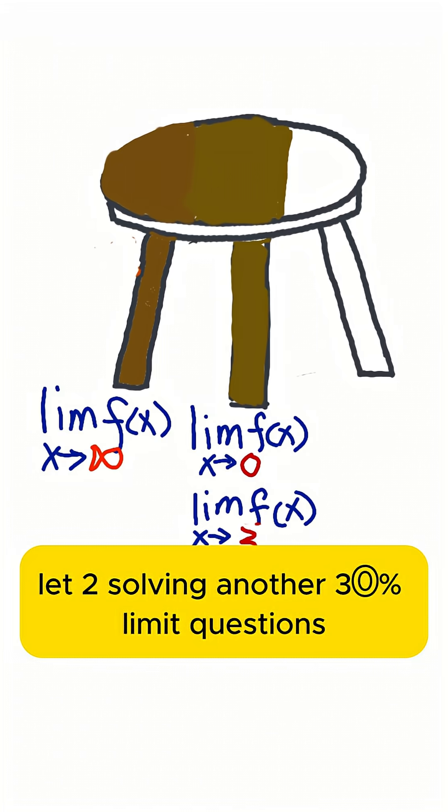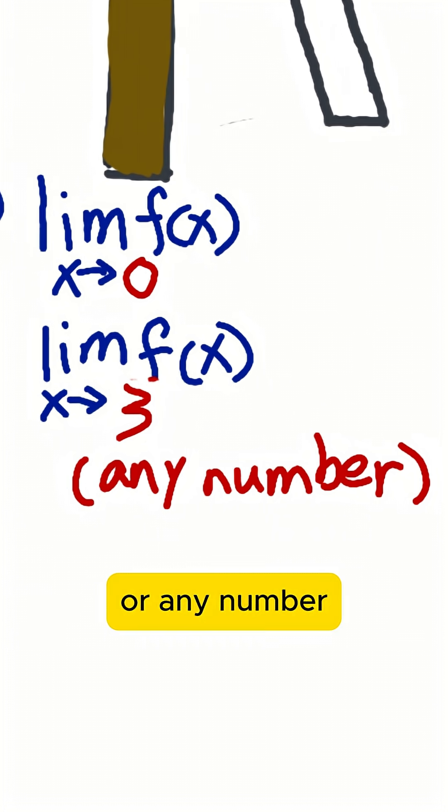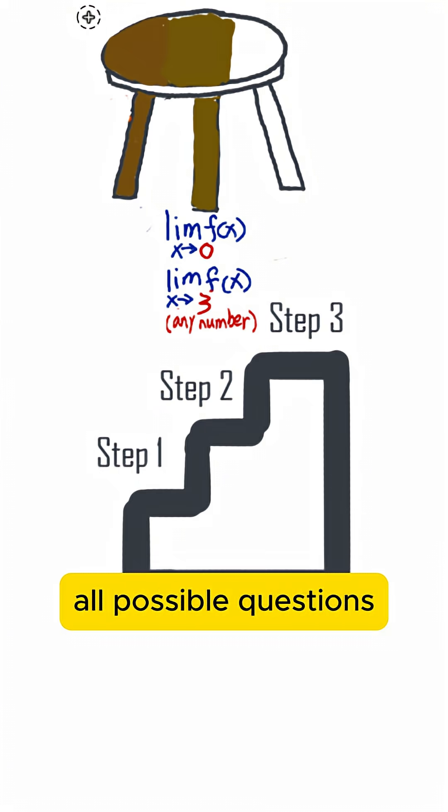Leg 2: solving another 30% of limit questions when X is approaching 0 or 3 or any number. There are three steps to comprehend all possible questions.